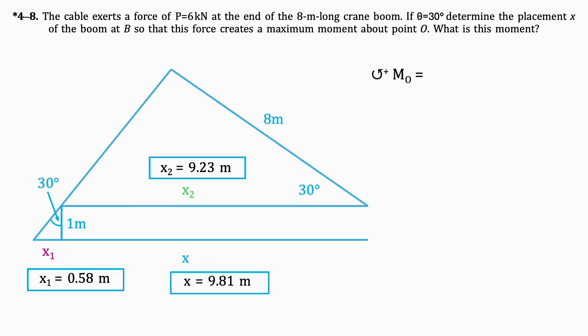Now, let's answer the last part of the question, which asks us to find the moment of the force about O. We multiply the magnitude of the force, which is 6 kN, by its distance from O, which is 8m. The result is 48 kNm in the counter-clockwise direction.